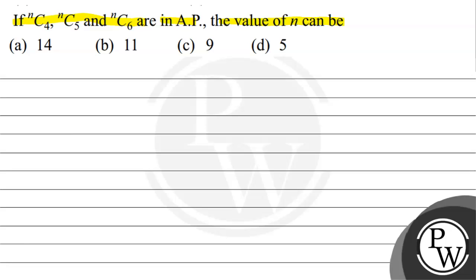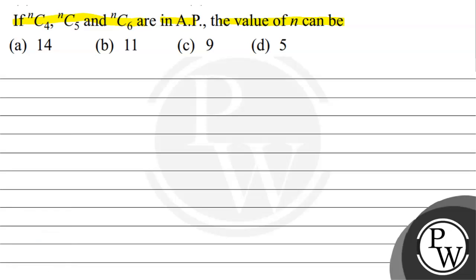The key concept for this question is: NCR equals N factorial divided by (N minus R) factorial into R factorial. And if three numbers A, B, and C are in AP, then 2B equals A plus C.